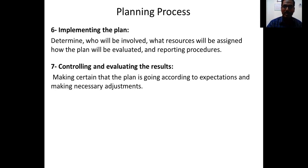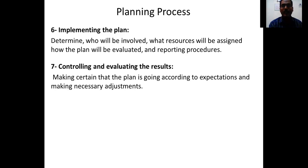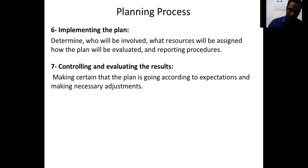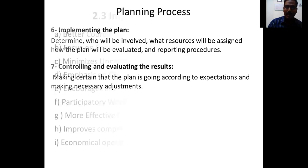The seventh step is controlling and evaluating the results — making certain that the plan is going according to expectations and making necessary adjustments. Superiors monitor the progress of subordinates, and if there is any deviation they rectify and streamline it so that the goal is achieved through the proper planning process and within the stipulated deadline. These are the seven steps in the planning process.